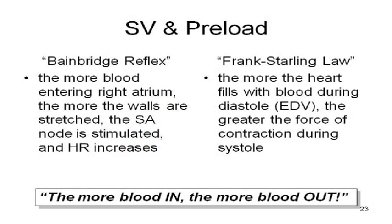The Bainbridge reflex is what happens with the SA node — the more blood entering the right atrium, the more the walls are stretched, the SA node is stimulated, and heart rate increases. Frank-Starling stated that the more the heart fills with blood during diastole, the more it is stretched and the greater the force of contraction. Put the two together: the more blood in, the more blood out; the more blood in, the faster the heart beats; the more blood in, the stronger the heart beats.